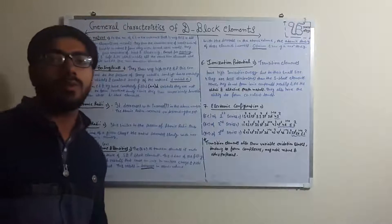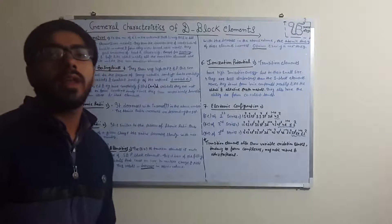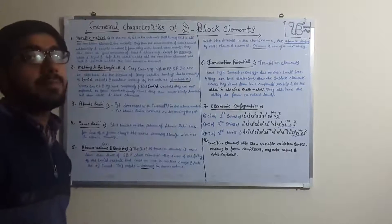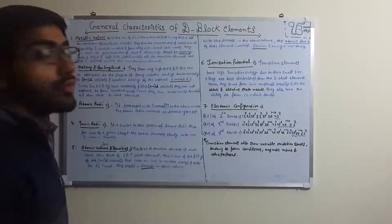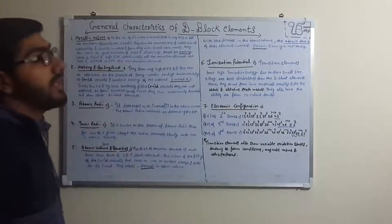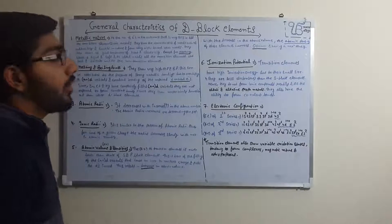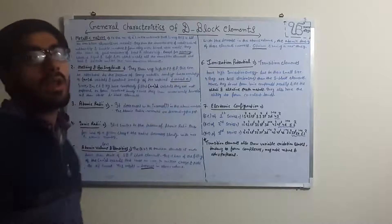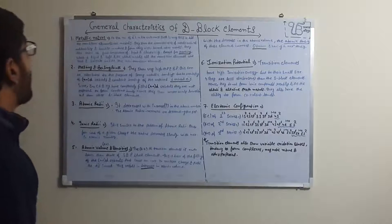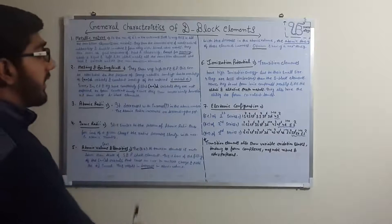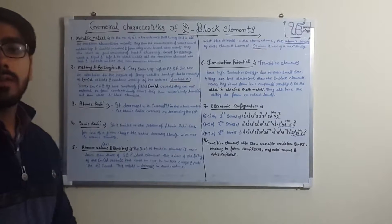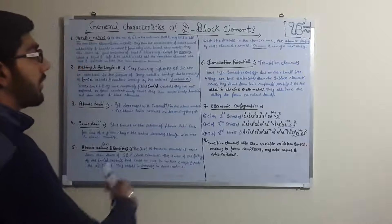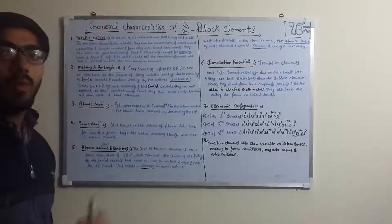Hello friends, today our topic is general characteristics of D block elements. These are from the periodic table's S, P, D, F blocks, and today we'll cover D block elements. There are seven general characteristics of D block elements, so let me start one by one.